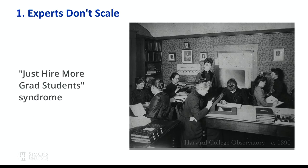Number one: experts don't scale. Astronomers haven't quite figured that out yet. This picture from the 1890s shows so-called computers looking at lots of images — when astronomy had a big data problem, the solution was to hire and train people to just look at data. I call this the 'just hire more grad students' syndrome. That obviously doesn't scale in sheer numbers, and if we need real-time applications where an image is taken and 60 seconds later you need to take another action, people aren't that fast. And from another perspective, people are pretty subjective — so we want to do this programmatically and systematically.